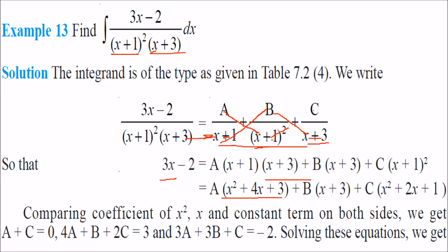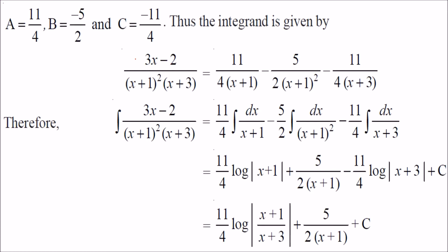Equating coefficients: the x² coefficient gives A+C = 0; the x coefficient gives 4A+B+2C; and the constant term gives 3A+3B+C = −2. Solving these three equations gives you the values of A, B, and C.